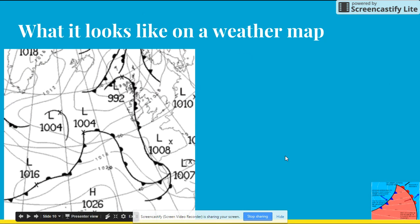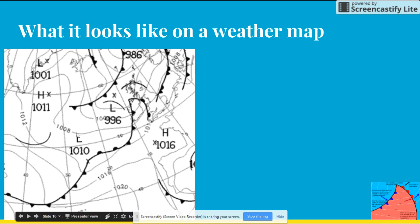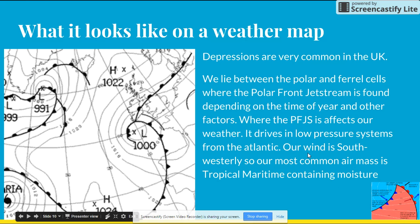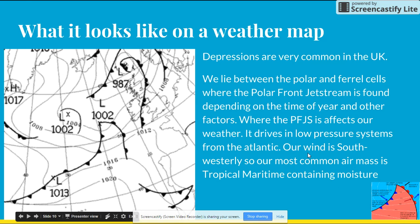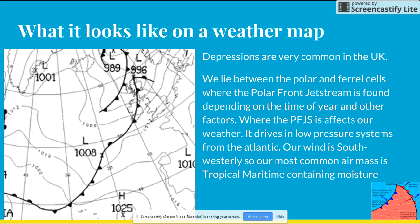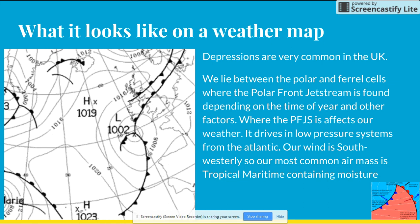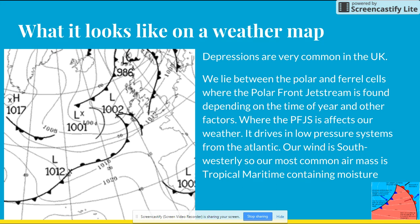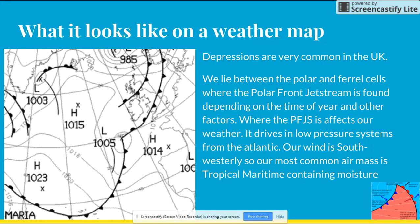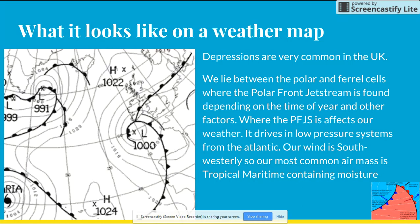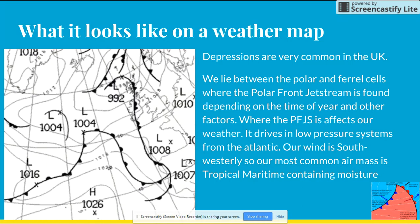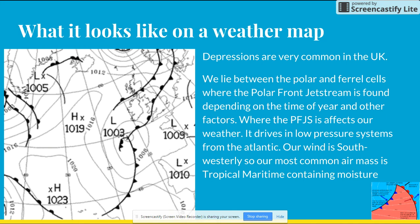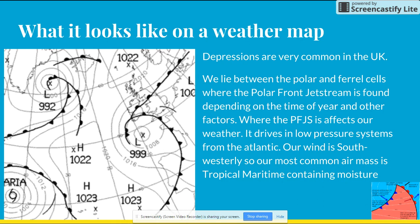This is what a depression looks like on a weather map — the L represents low pressure. Depressions are very common in the UK. We lie between the polar and Ferrel cells, roughly, where the polar front jet stream is found. This depends on the time of year and other factors, such as where the ITCZ is. The jet stream drives in low pressure systems from the Atlantic. Our prevailing wind is southwesterly, so our most common air mass is the tropical maritime, which contains moisture as it travels over the ocean. This is why we get a lot of rain.